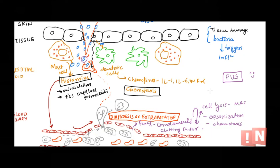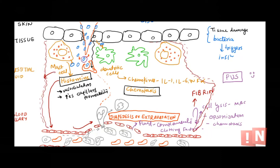Complements also help in activation of clotting factors for blood clot formation — activating the clotting cascade. Blood clot formation is very important for two reasons: first, the fibrin strands form a wall-like structure, sealing off the affected area so infection does not spread; and second, it seals the wound. So fibrin strand formation seals the wound and prevents the spreading of infection.